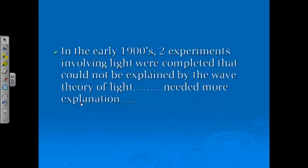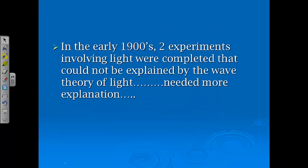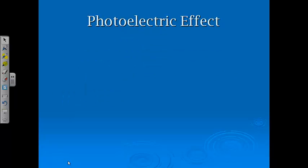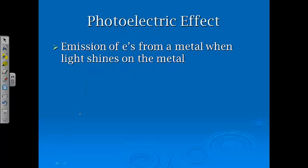Moving on with some more information. In the early 1900s, at this point, everyone thought that light was a wave. In the early 1900s, two experiments involving light were completed that could not be explained by only wave theory. Remember, a theory is simply an explanation, so they needed to update those explanations. It actually took Einstein to get there, so don't feel bad if it doesn't make total sense.